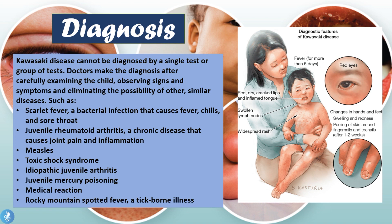Kawasaki disease cannot be diagnosed by a single test or group of tests, since the exact cause of the disease is unknown. Doctors make the diagnosis after carefully examining the child, observing the signs and symptoms, and eliminating the possibility of other similar diseases such as scarlet fever, juvenile rheumatoid arthritis, measles, toxic shock syndrome, idiopathic juvenile arthritis, juvenile mercury poisoning, a medical reaction, or Rocky Mountain spotted fever. The diagnosis is made by ruling out other conditions that may have caused the symptoms.